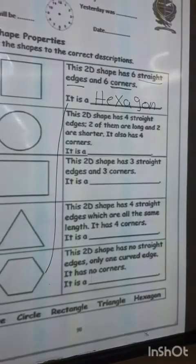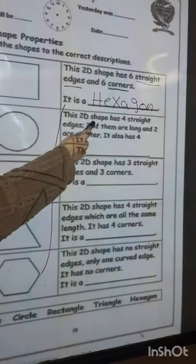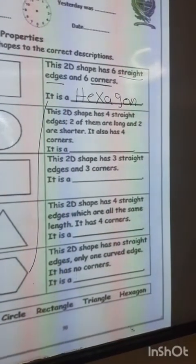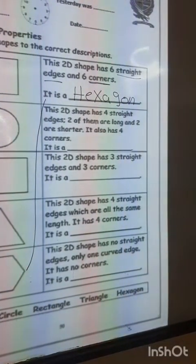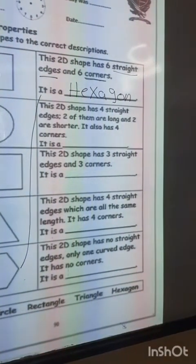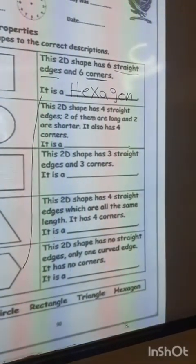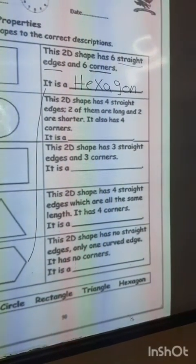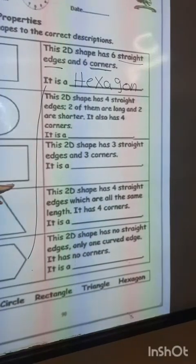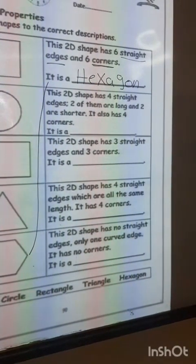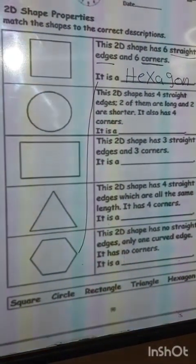Number two. This 2D shape has four straight edges. Two of them are long and two are shorter. It also has four corners. Which shape has two long edges and two shorter edges? That's right, rectangle.